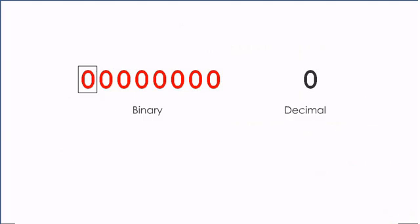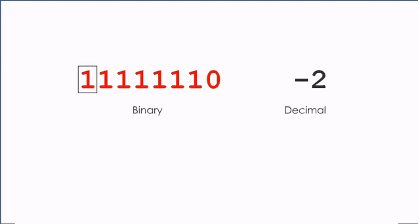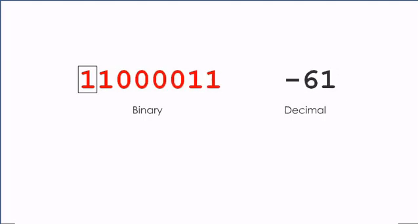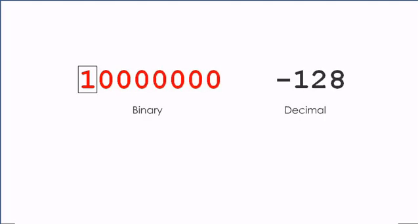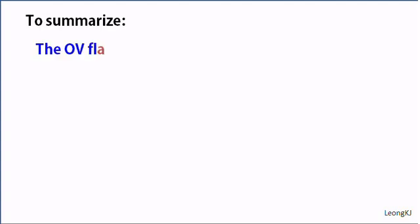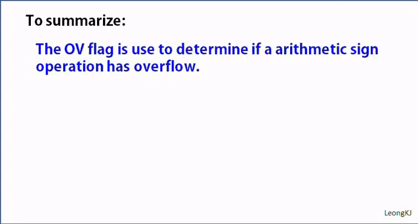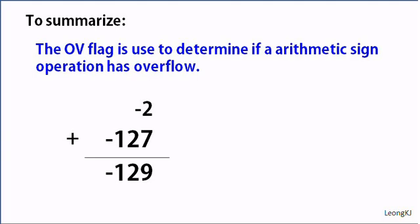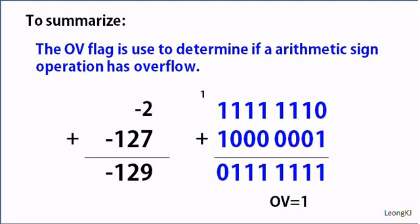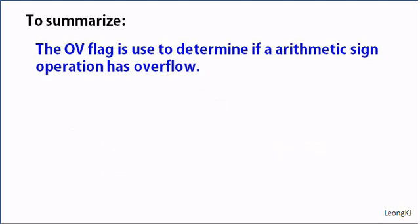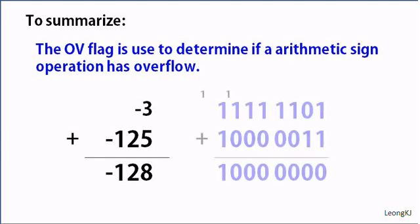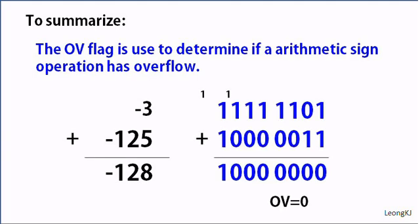Let's recap the counting of negative numbers. To summarize: the OV flag is used to determine if an arithmetic signed operation has overflowed. The addition of negative 2 and negative 117 would cause an overflow. The addition of negative 3 and negative 115 is alright, as the result negative 118 is within range of an 8-bit signed number.